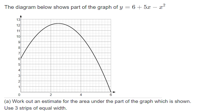The next diagram shows part of the graph of y = 6 + 5x − x² and we're asked to work out an estimate for the area under the part of the graph shown. It says 'estimate' - that doesn't mean to just have a guess, it means to use as accurate a method as you can while understanding it won't be 100% perfect. The method we use is to break up the shape underneath the graph into polygons whose areas we can calculate.